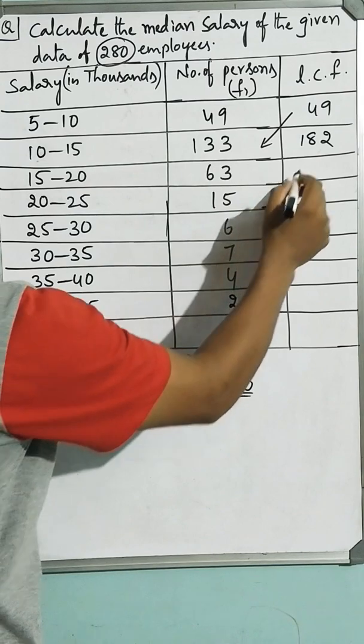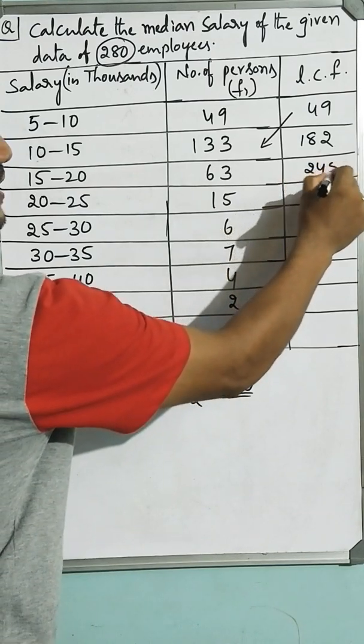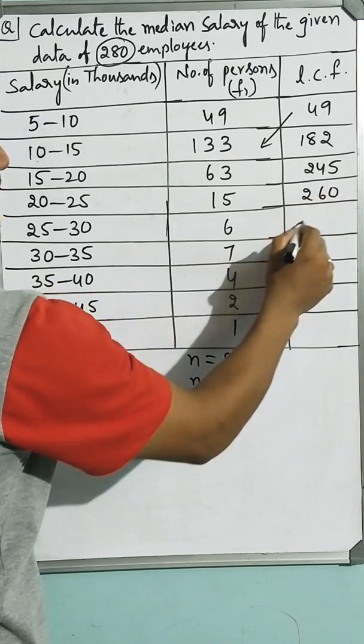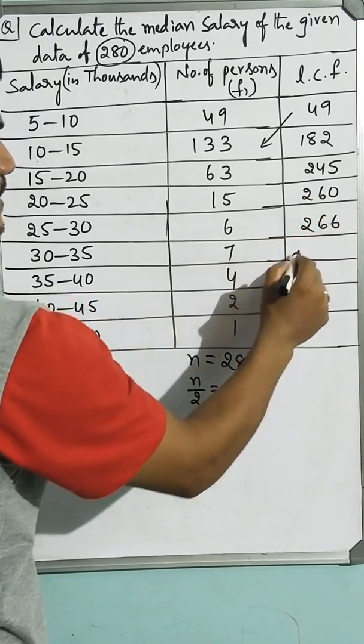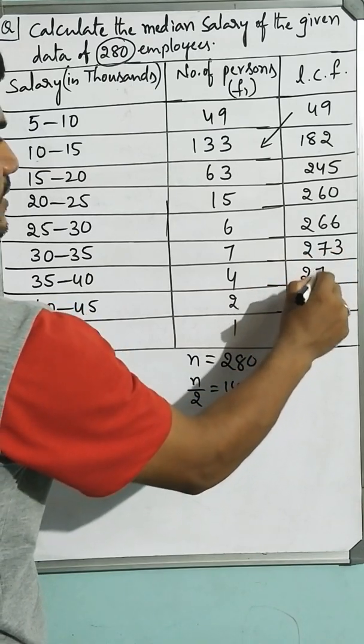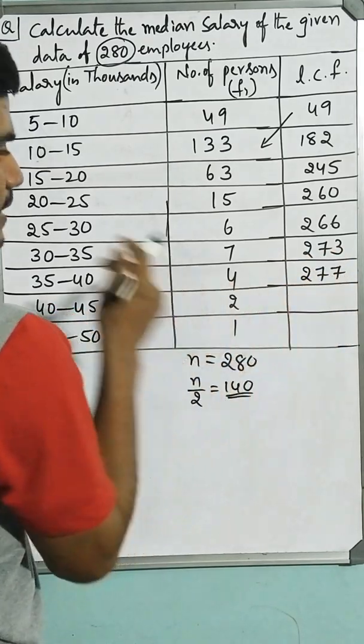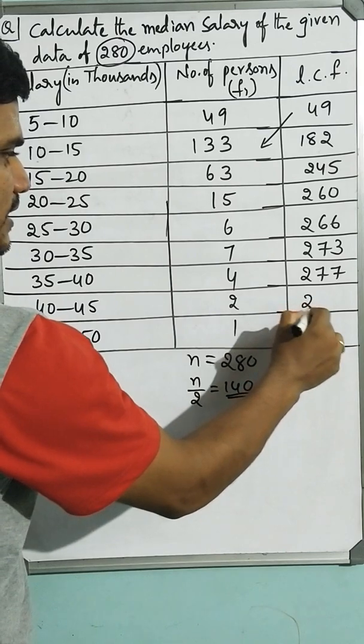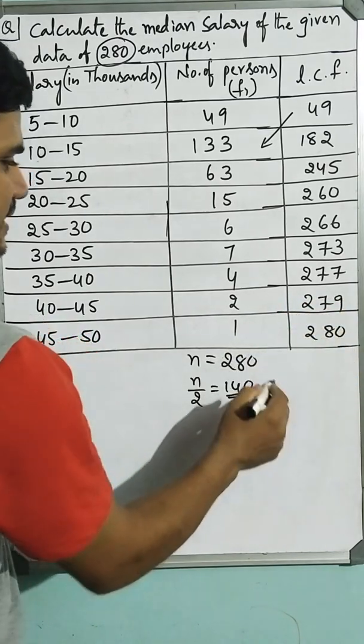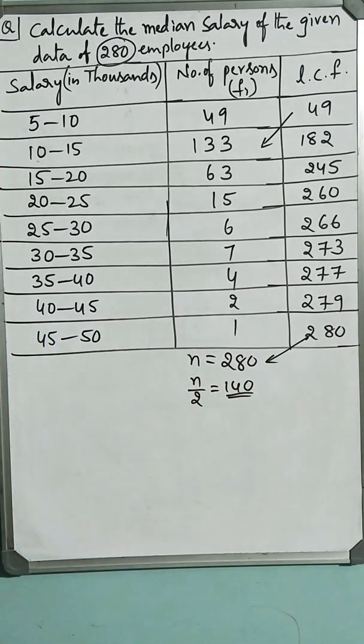182 plus 63, 245 plus 15, 266 plus 7, 273 plus 4, 277 plus 2, 279 plus 1, 280. So sum of the frequencies is 280.